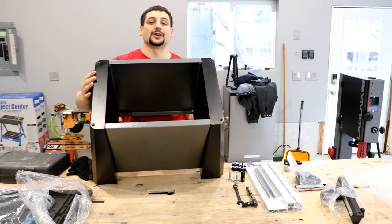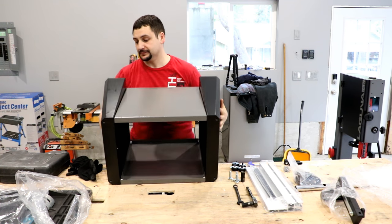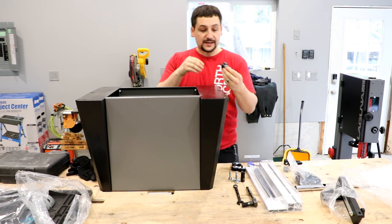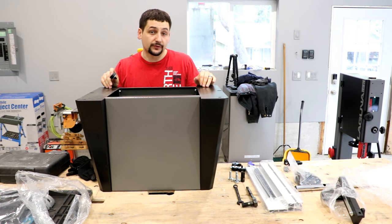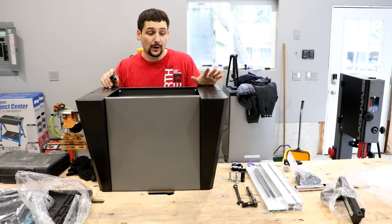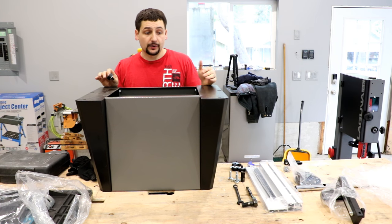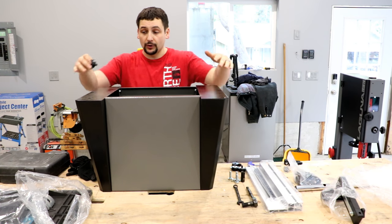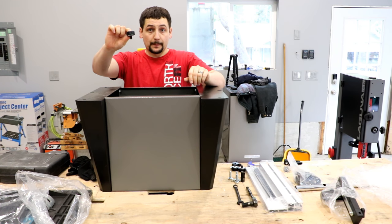Once we get those put on, we're going to flip it over so it's upside down and we're going to install the feet. I have ordered a wheel kit for this but it won't be here for quite a while. So because I want to get the saw up and running, I'm going to go ahead and install this now. I'm going to put all four rubber bumpers on the feet.